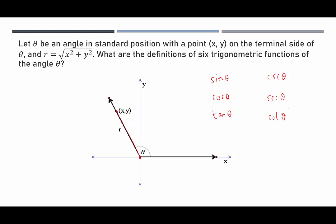We can think about creating a right triangle with segment r down to the x-axis by dropping a perpendicular. Now we have a right triangle, and we look at our reference angle theta-hat. Based on the reference angle, sine is opposite over hypotenuse — that's y over r. So we find sine by doing y over r.